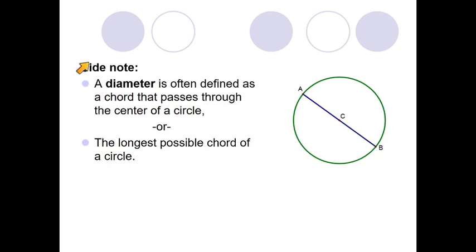Now a side note, after talking about chords, I want to make sure this is clear. You've heard the definition of diameter before. It's often defined as a chord that passes through the center of the circle, because we can see chord AB is in fact a chord. It's a segment that has endpoints on the circle itself, just like we defined in the last slide, but also it passes through the center and that's exactly what a diameter is.